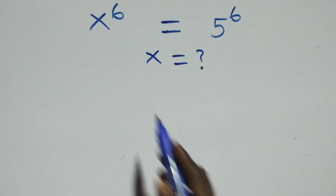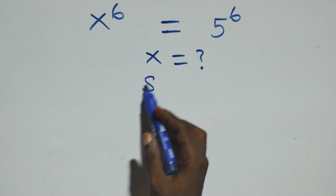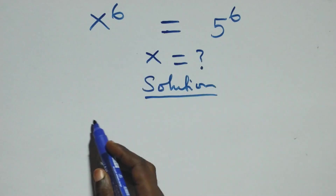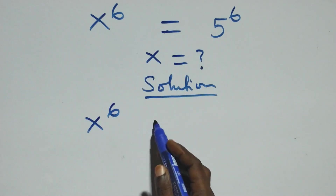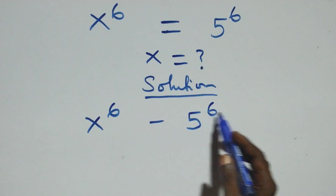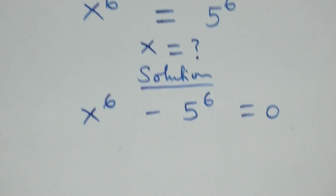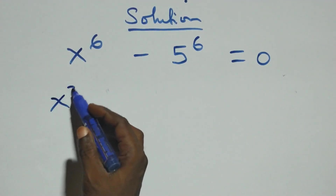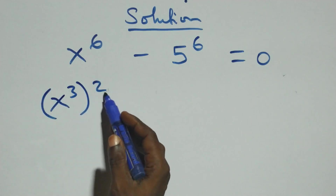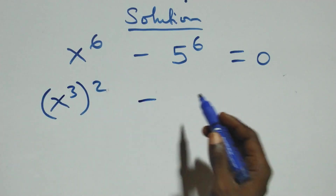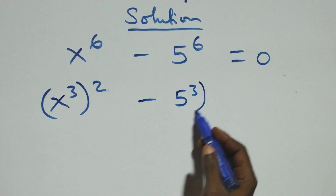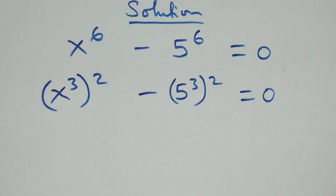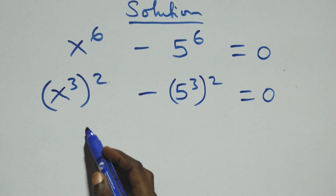Hello, you are welcome. How to solve this nice exponential equation. From what we have here, we take 5 raised to power 6 to the left-hand side. Here we have x raised to power 6 minus 5 raised to power 6 equals zero. From here, the next step, we can write this as x raised to power 3, raised to power 2 — since 2 times 3 gives 6 — then minus 5 raised to power 3.